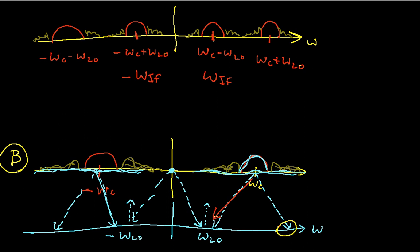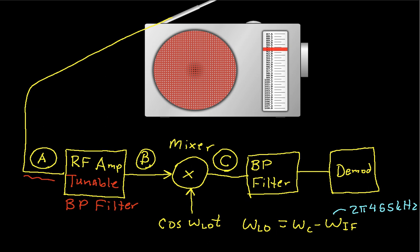So if we go back to our picture, I now know what C looks like. It's got the radio signal that I want at the intermediate frequency. This band pass filter is now a band pass filter that has very sharp pass bands.